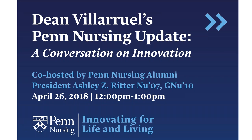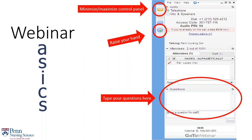This webinar is scheduled for one hour. Before we get started, let's go over some basics on using the webinar features. Everyone is muted on the call to reduce background noise. During the presentation you can communicate with the organizer about any tech concerns via the chat function, and you can submit any questions for me or the dean using the question function. On the right side of your screen you should see the GoToWebinar control panel, a gray box that provides you with information on the webinar functions and ways to interact with the organizers.